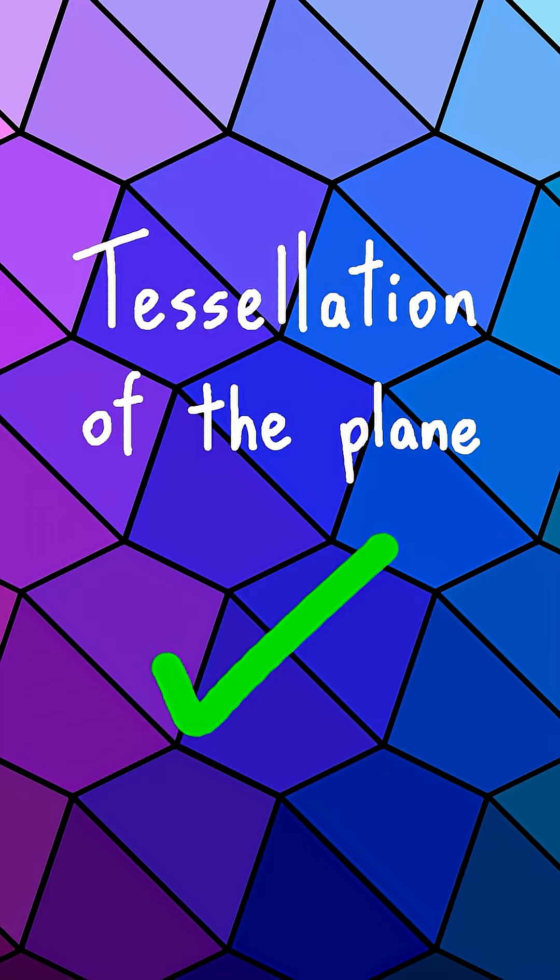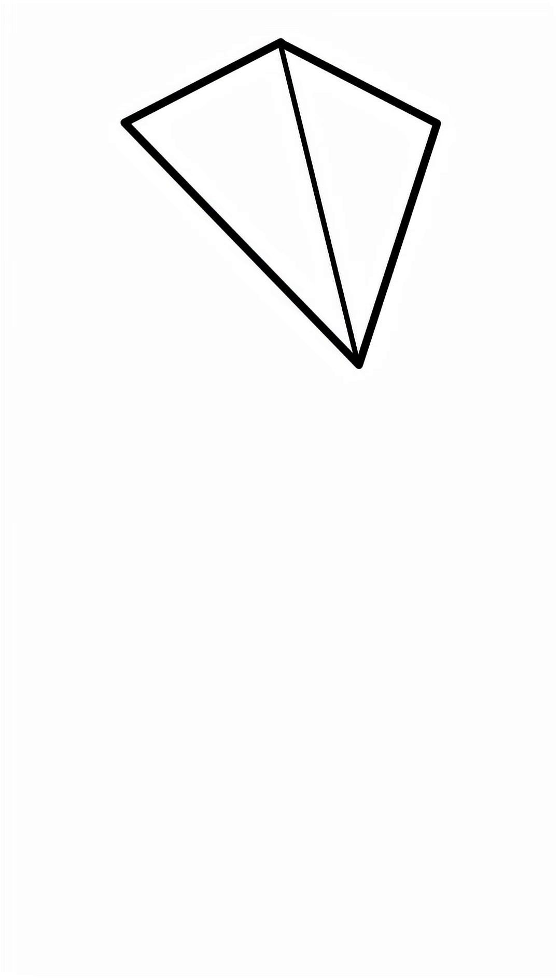The first fact is also true. Notice that a quadrilateral is just two triangles, and since the angles in a triangle add up to 180 degrees, the angles in a quadrilateral add up to 360.